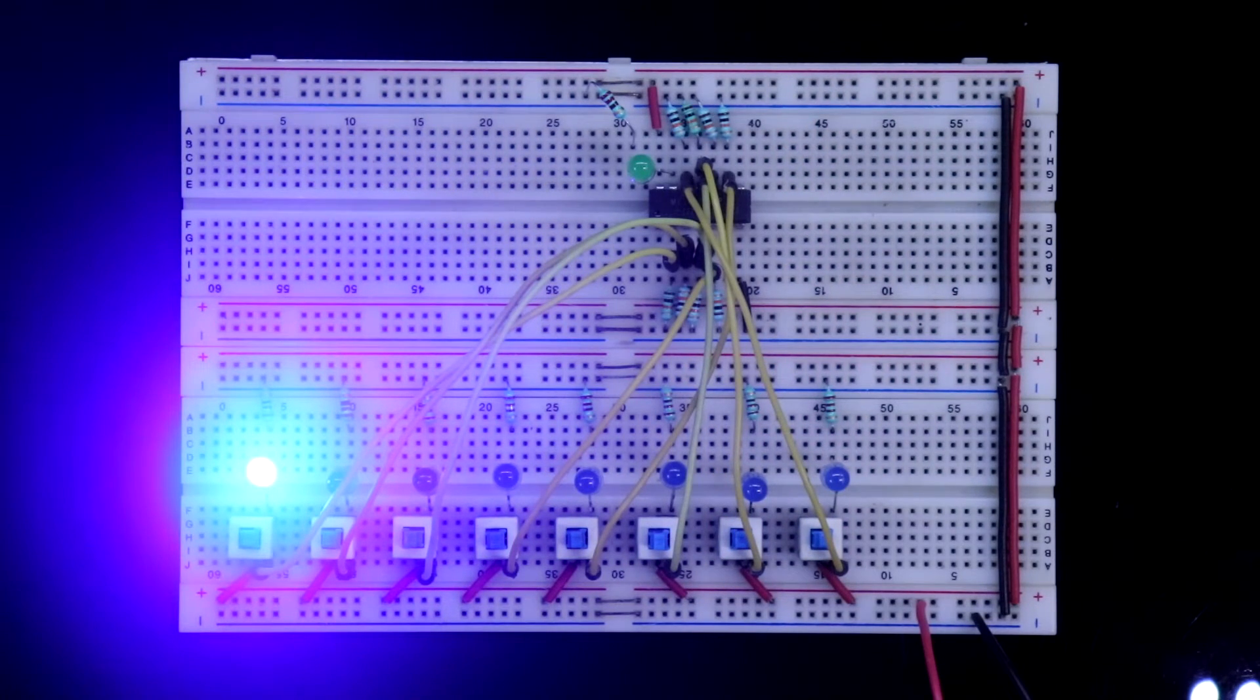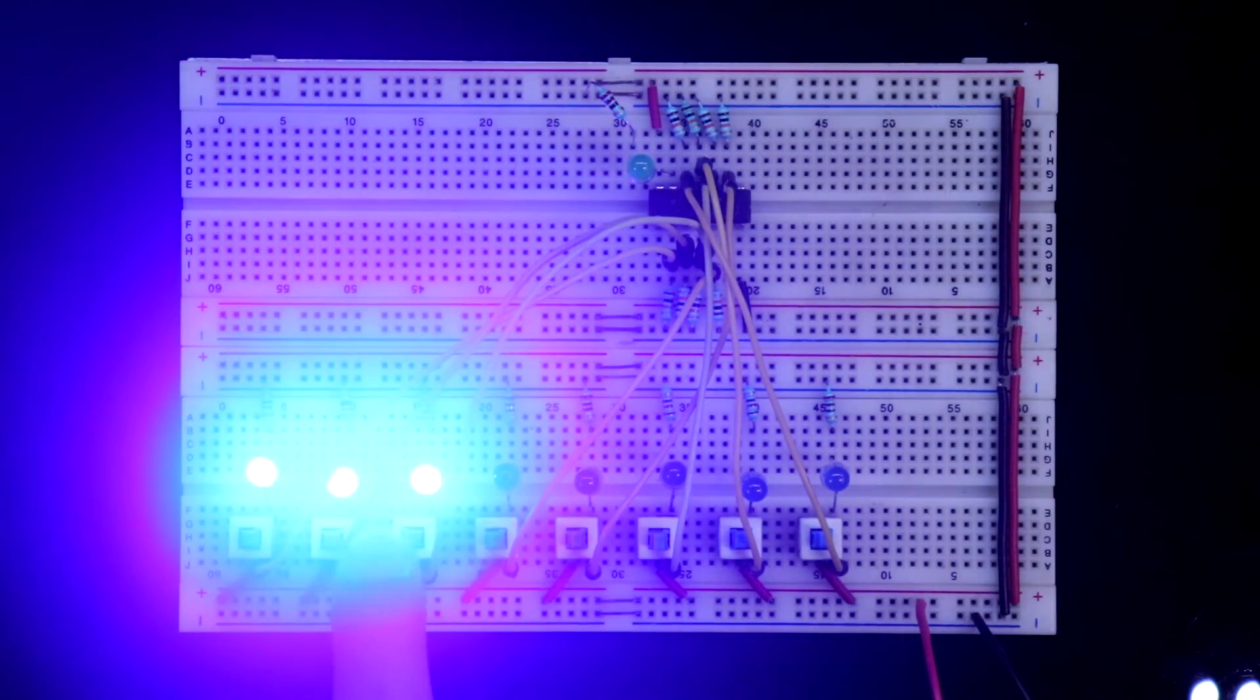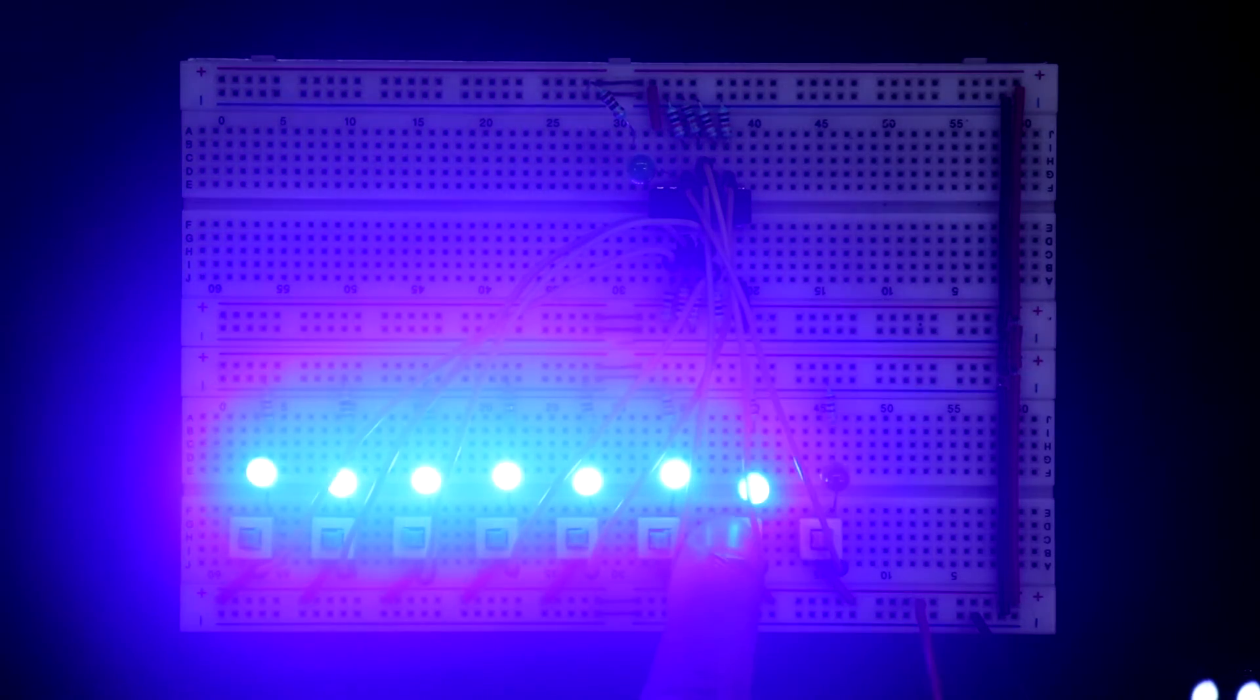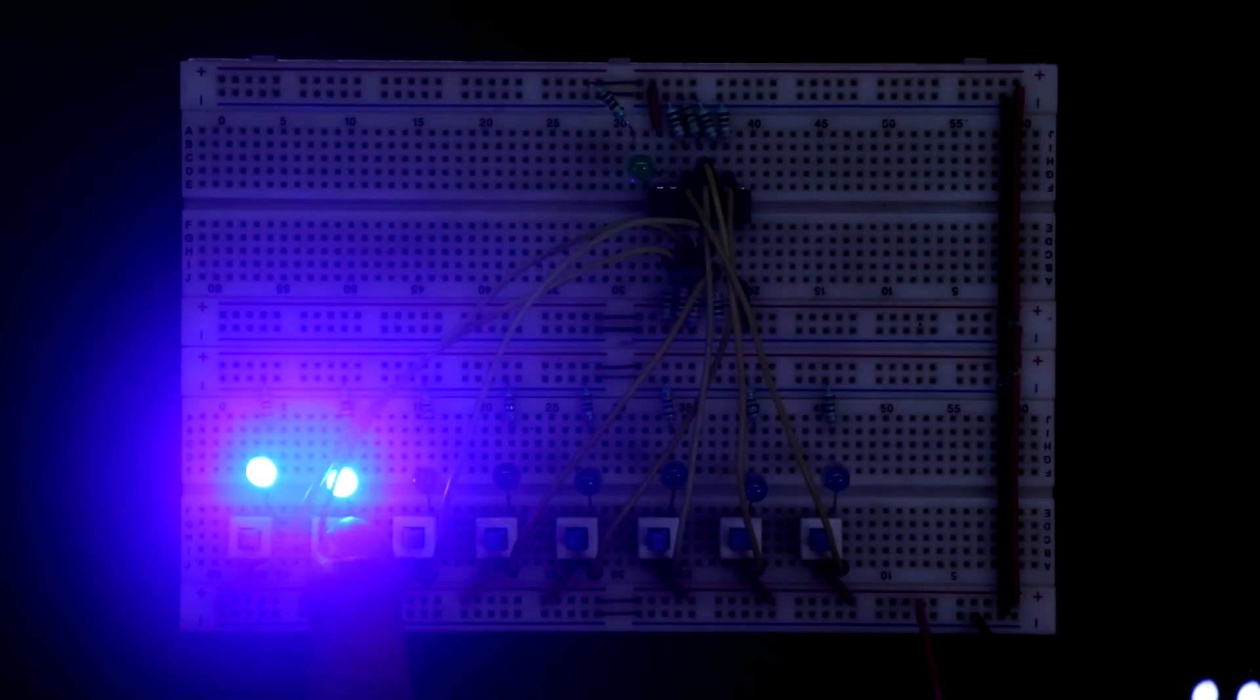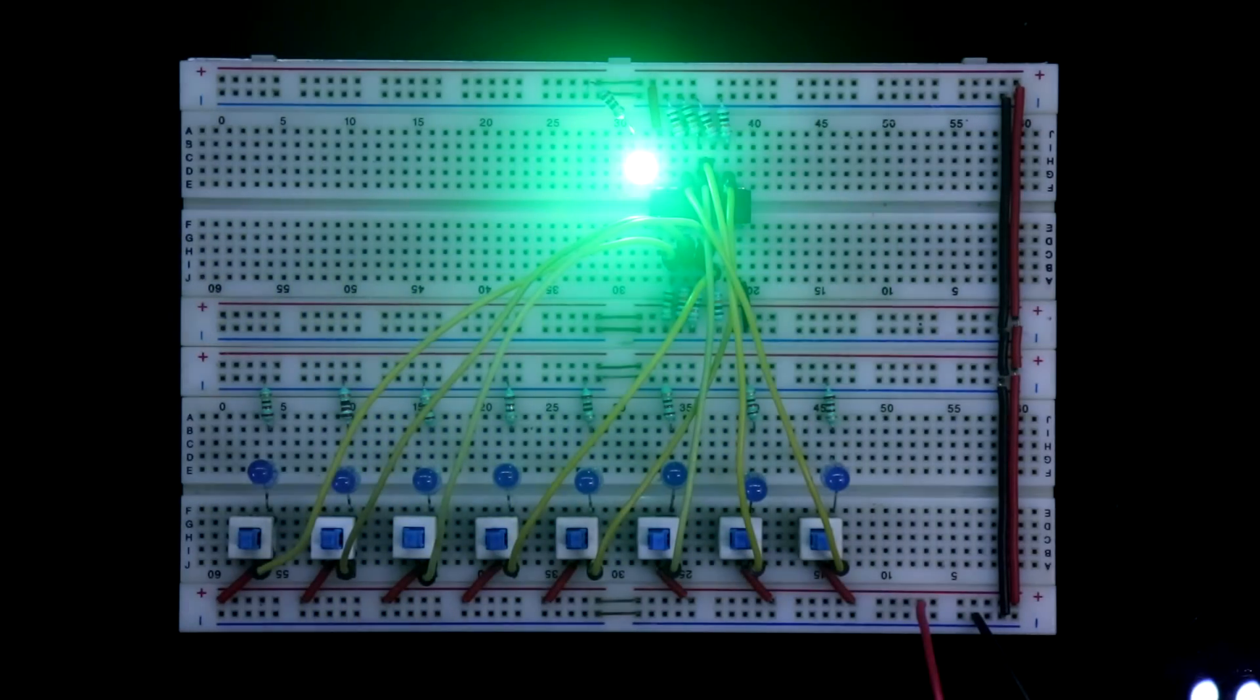If you make all the input 1, nothing will change. To get output as high, we have to make all the input 0. So this is how NOR gate works.